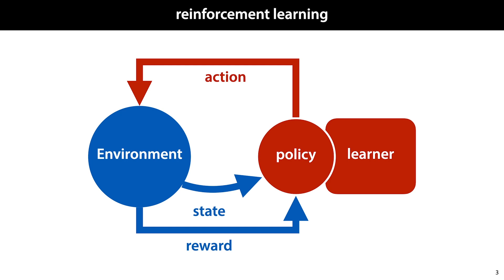If you have a problem you'd like to solve with reinforcement learning, you must translate it to the reinforcement learning abstract task by deciding what your states and actions are and how to learn the policy. The only real constraint that reinforcement learning places on your problem is that for a given state, the optimal policy should not depend on the states that came before — only the information in the currently observable state counts. This is a little bit like the Markov assumption that we saw in sequence learning, and for this reason this kind of framework is known as a Markov decision process.